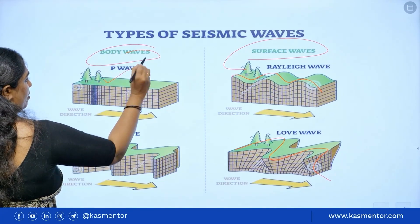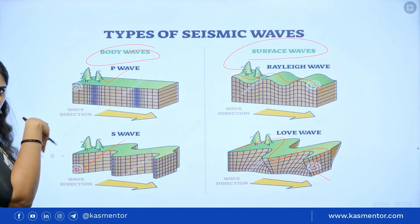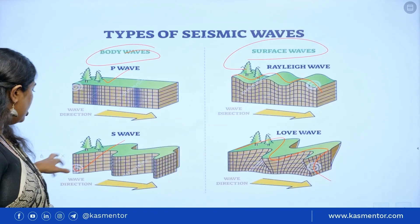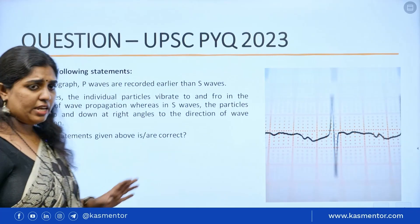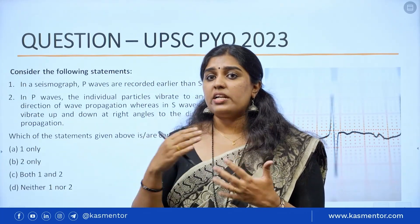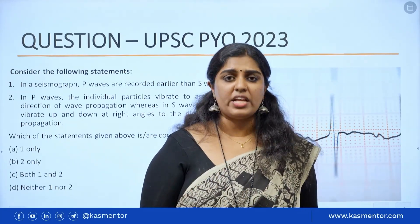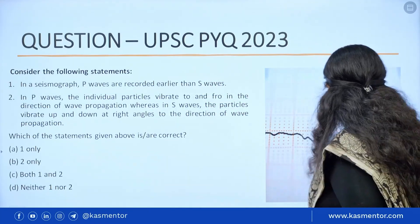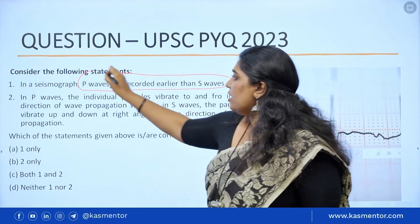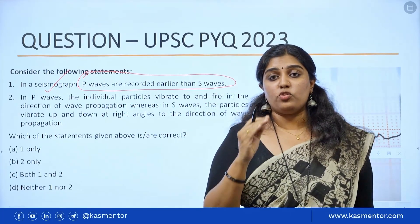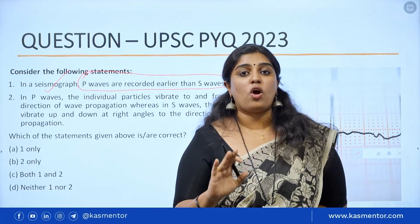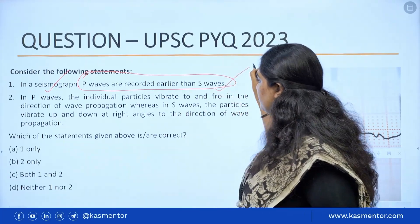So that is what a surface wave is. If we look at body waves — the P wave and the S wave — and consider the to-and-fro motion, the compressional motion, and the longitudinal direction, we can now try solving the question. The first statement: P waves are recorded earlier than S waves in the seismograph. Yes, the statement is correct.